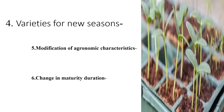The fourth objective is varieties for new seasons. Varieties have been developed by adjusting the growth cycle to suit the available growing season. Traditionally maize is a kharif crop, but scientists have made it possible to grow maize throughout the year. Similarly, moong is now grown as a summer crop in addition to the main season.